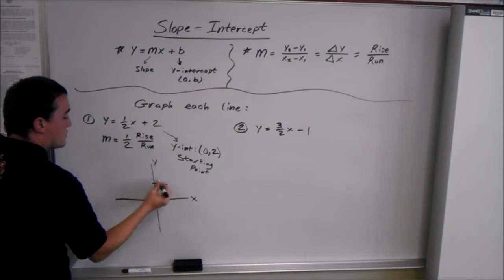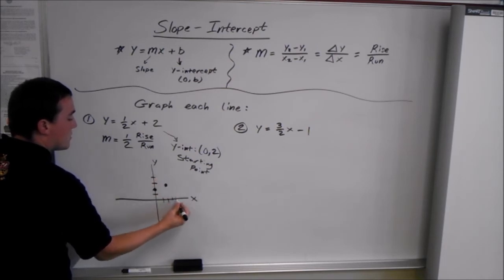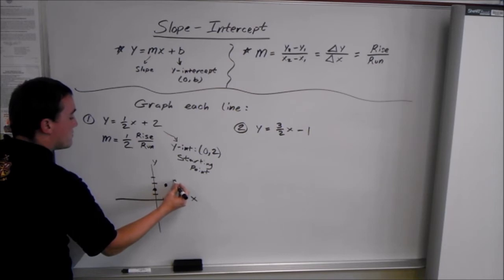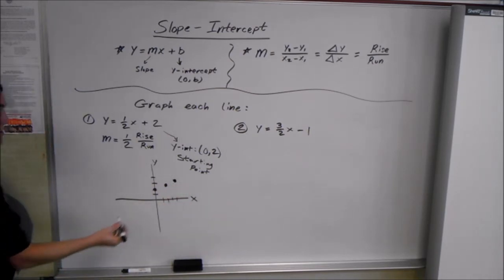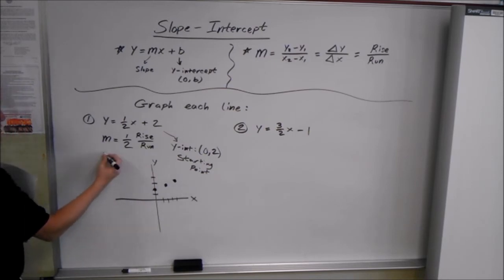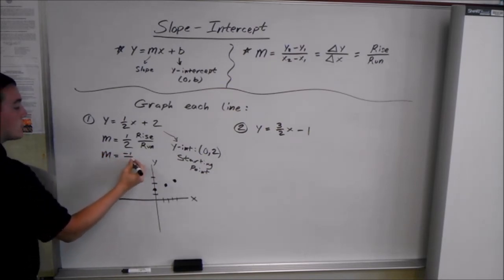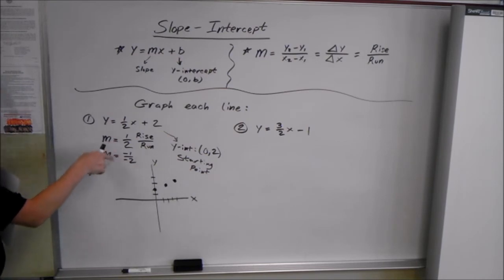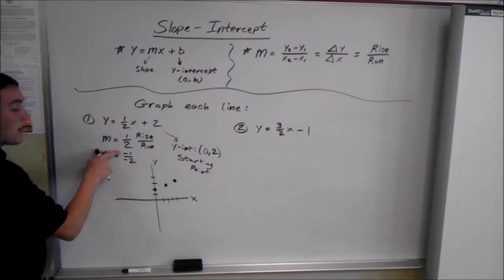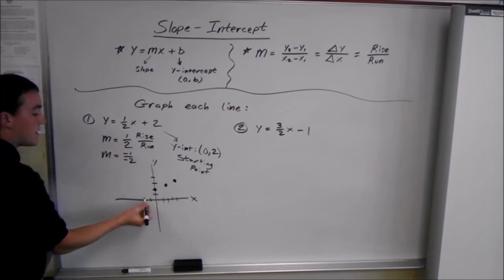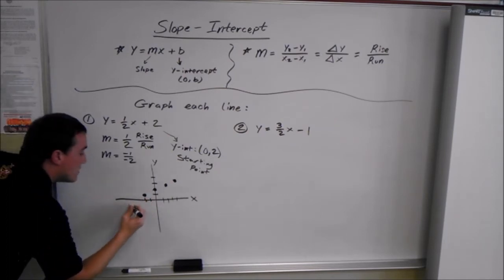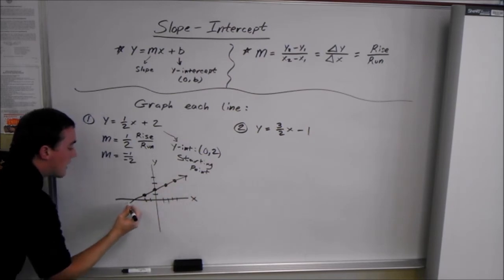We can also go in the other direction by treating the slope as negative 1 over negative 2 — two negatives make a positive, so we're not changing the slope. Going down 1 and left 2 gives points in the other direction. Now we can draw the line.